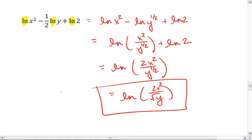And that's your final answer. So when you're given a string of plus and minuses, just go in order. Do ln of x squared minus the ln of y to the 1 half first. Then deal with that term plus ln of 2.